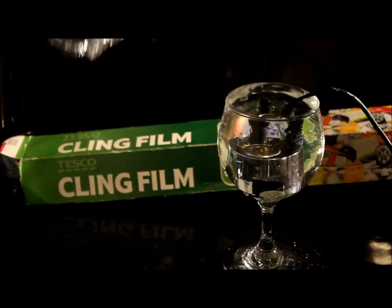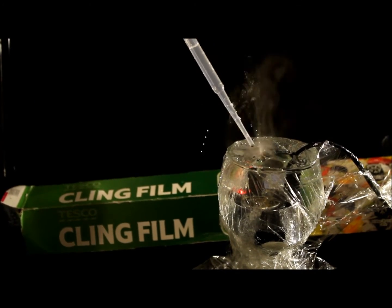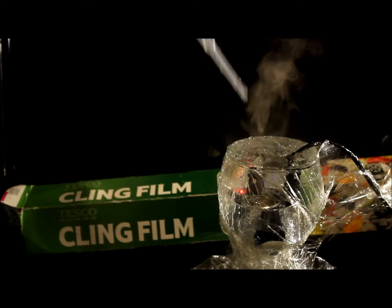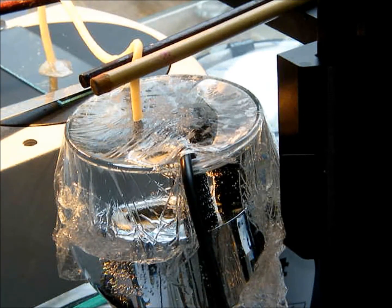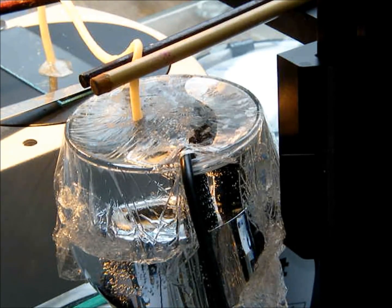Placing kitchen film over the glass stops the water escaping, but lets the sound come through. When the spaghetti is in contact with the film, sound goes into the spaghetti.